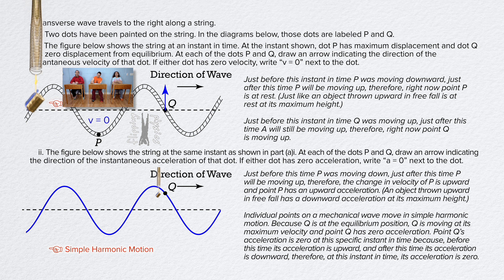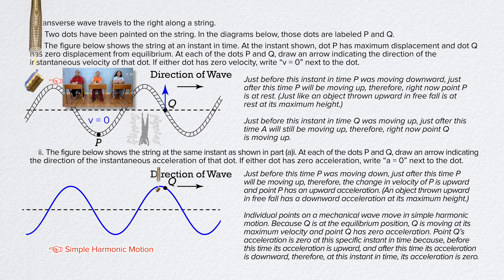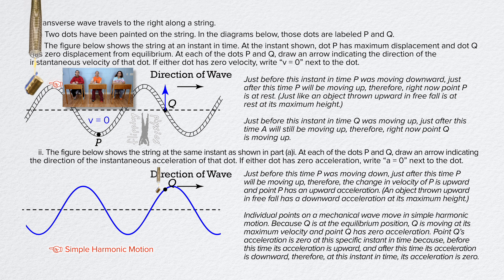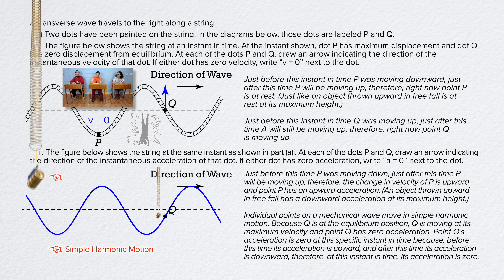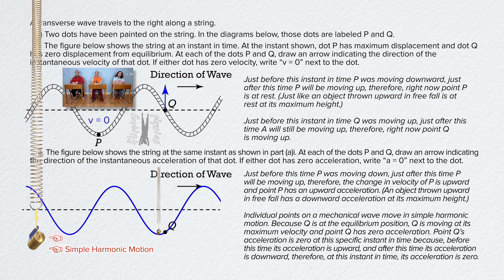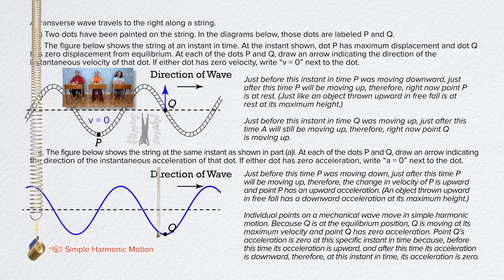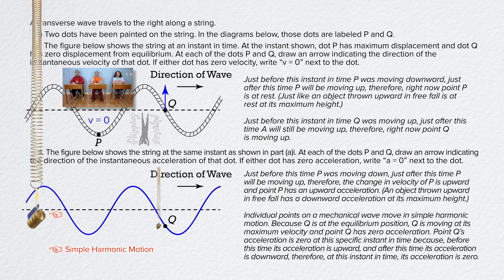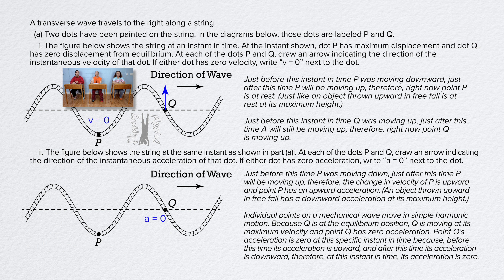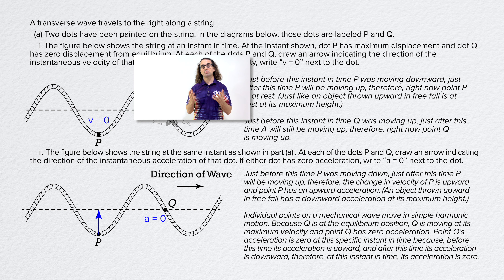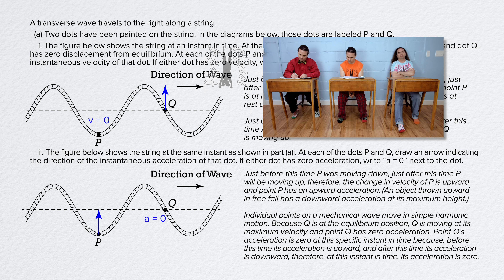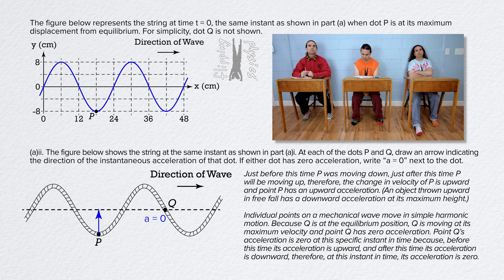That's just like an object thrown upward in freefall is at rest at its maximum height. Looking at point Q: just before this instant in time, Q was moving upward. Just after this time, Q will still be moving up. Therefore, right now, point Q is moving upward. So, to answer the question, write V equals zero at point P and draw an upward arrow at point Q.